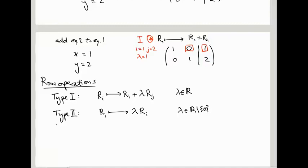There's one more kind of row operation — type 3 — which we didn't use here but can be very useful. This is simply swapping row i with row j, which corresponds to reordering your equations.